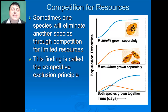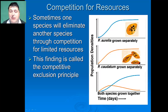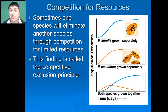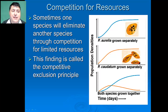As species compete for resources, oftentimes one will be more able to compete than the other, excluding the other species from that resource and perhaps forcing it out of that particular habitat. This finding is referred to as the competitive exclusion principle.